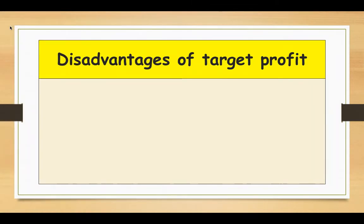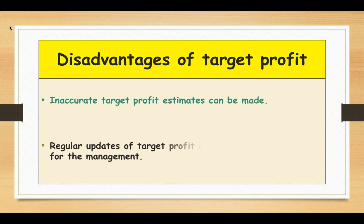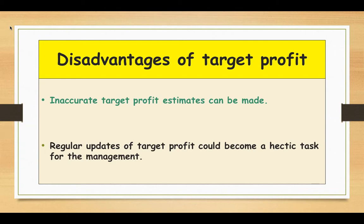As we all know, everything has its own advantages and disadvantages. Now we are going to see the disadvantages of the target profit decision. First, inaccurate target profit estimates can be made because target profit calculation is done by the top management. Second, regular updates of target profit could become a hectic task for the management, because they have to update the target profit as the business expands, and since this analysis requires updates on a regular basis, this could sometimes become a serious and hectic task for the management team.